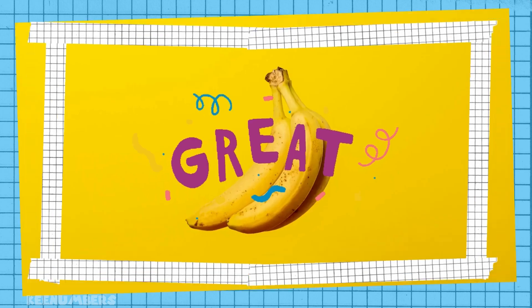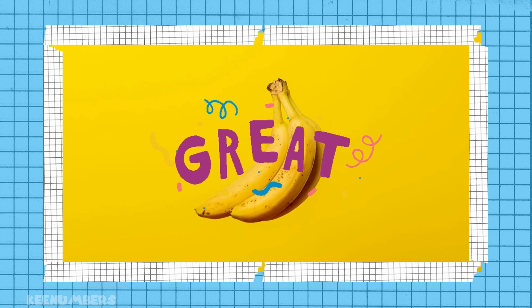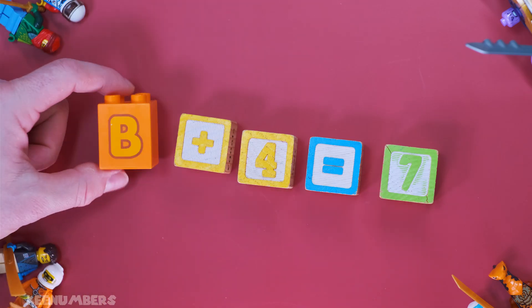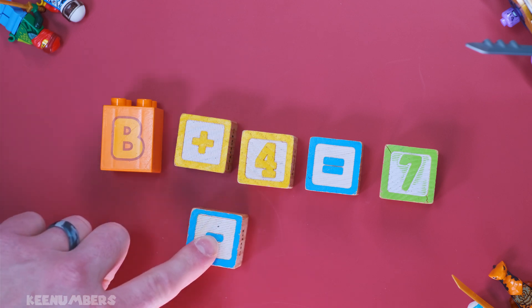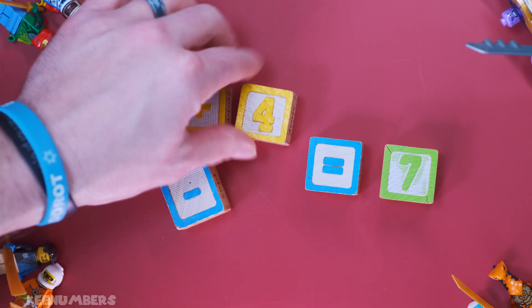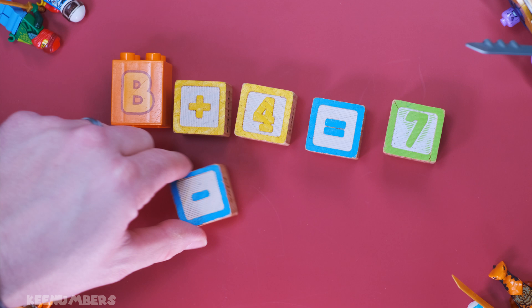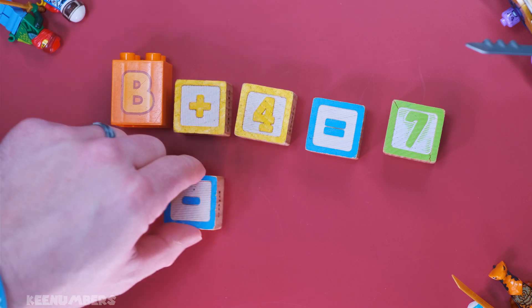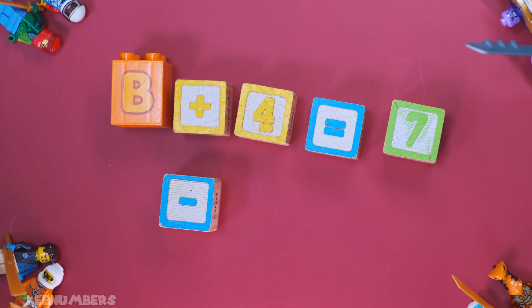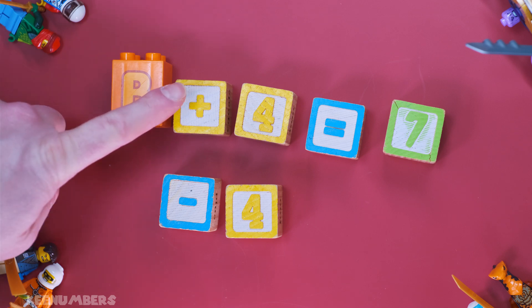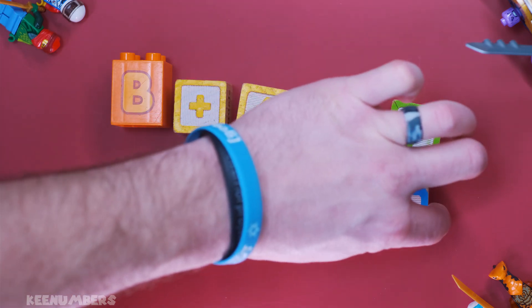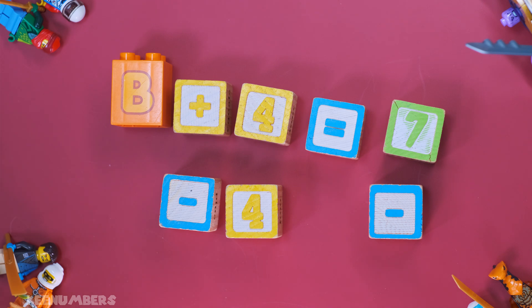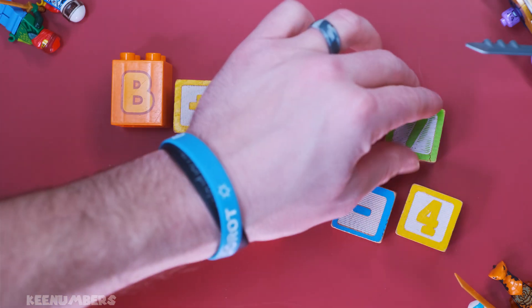B plus four is equal to seven. So what is B? What we're going to do is we're going to get rid of this four. We're going to subtract four on both sides. If we subtract four on both sides, that's going to cancel out the fours over here. Now, why do we do it on both sides? It's because what you do on one side, you have to do on the other.